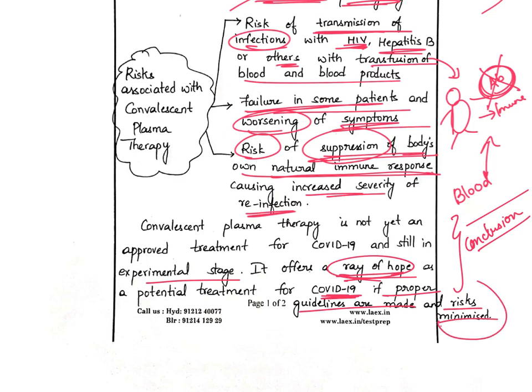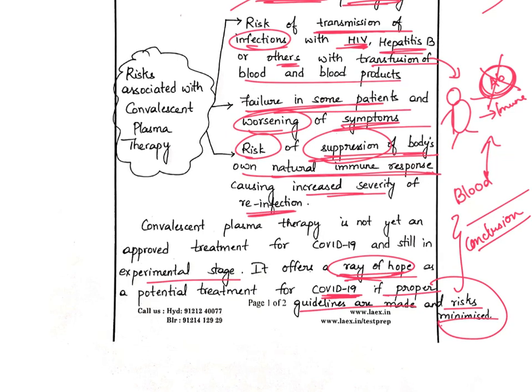Always try to avoid crossing the margins in the exam. In 2018, some candidates were awarded negative marks because of crossing margins or exceeding the word limit — some were penalized as much as minus 50 marks, which prevented them from making the final list. Such mistakes can prove to be very costly, so try to avoid them.